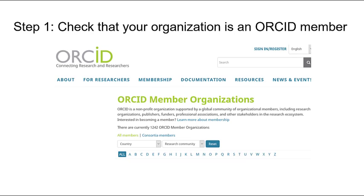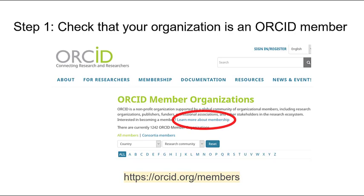The first step is to check to see that your institution is an ORCID member organization. You can visit orcid.org/members to see a full list of organizational members. You may need to connect with the ORCID contact at your institution, since they will need to confirm with ORCID that they would like to use one of your organization's member API credentials for your OJS journals. If your institution is not a member but would like to be, you can visit the Learn More About Membership page on the ORCID website to request membership.